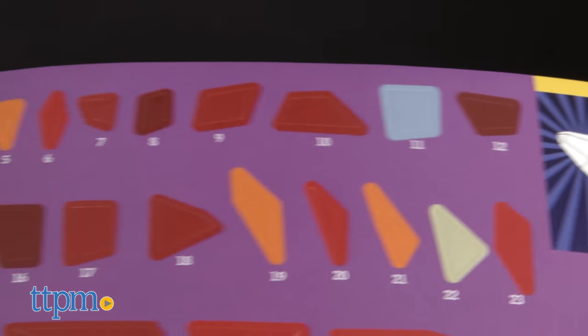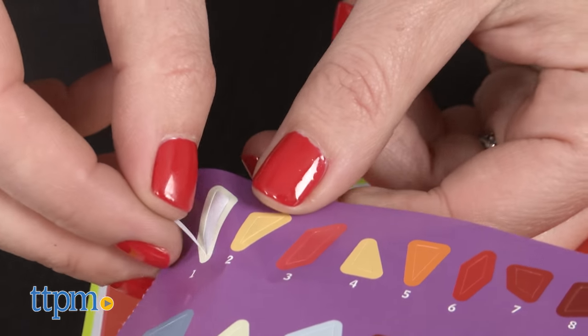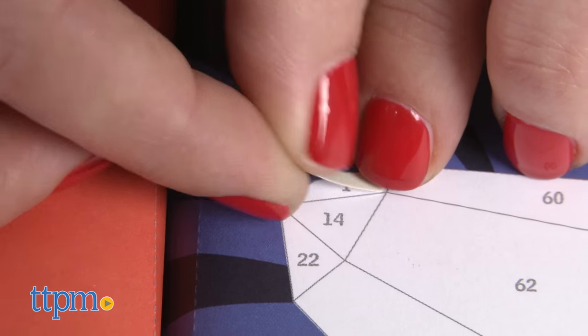Just like paint by number, each illustration is divided into spaces with a number that corresponds to a particular sticker. Find the sticker, peel it, and place it in the right space.